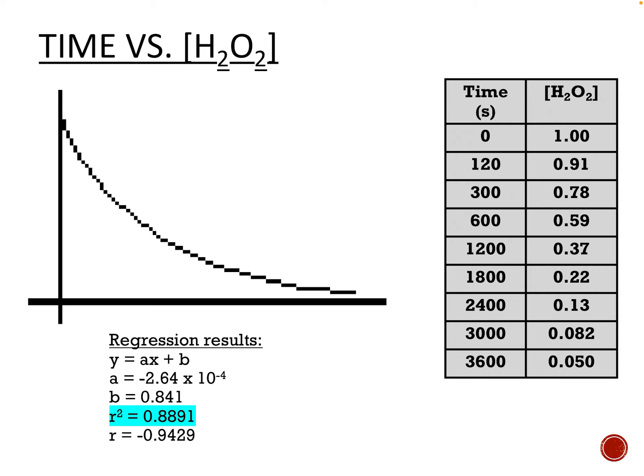Here's our time versus concentration graph with the regression results. Even just looking at it without the regression, this is not giving us a straight line — it's definitely a curve. The r-squared value is 0.8891. It might not sound bad, but that's actually a pretty bad line. So this is probably not zero order — some other graph will make a better straight line. Time versus concentration had that been linear would be zero order, but it doesn't appear to be.